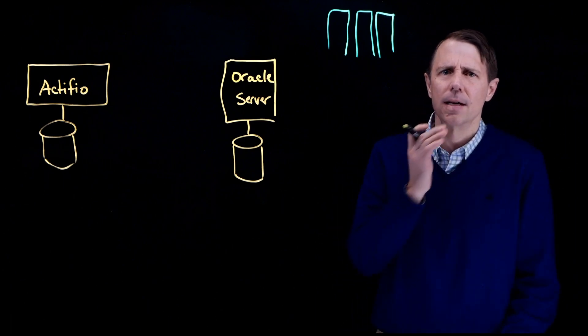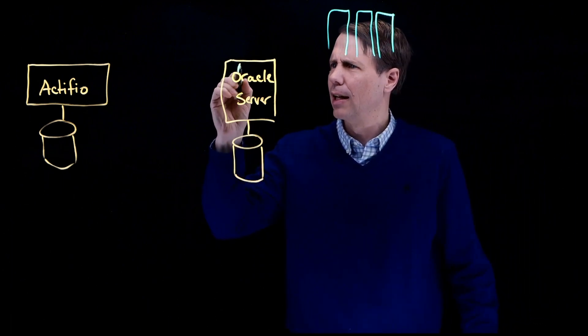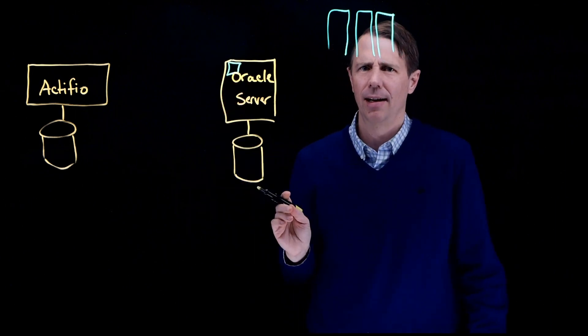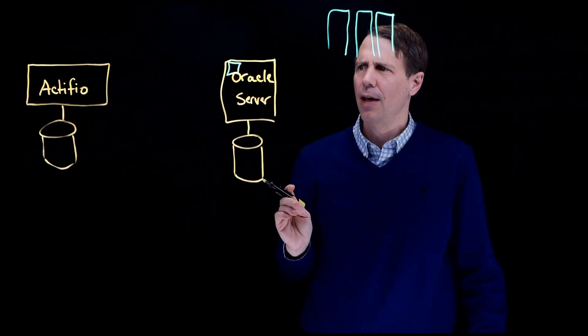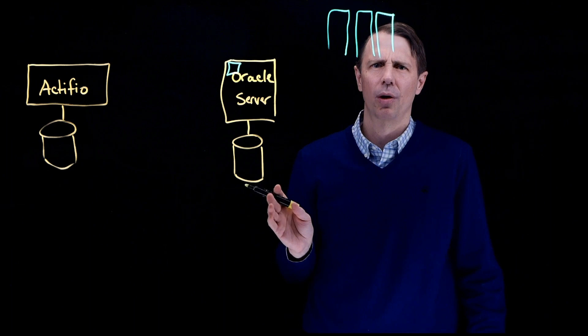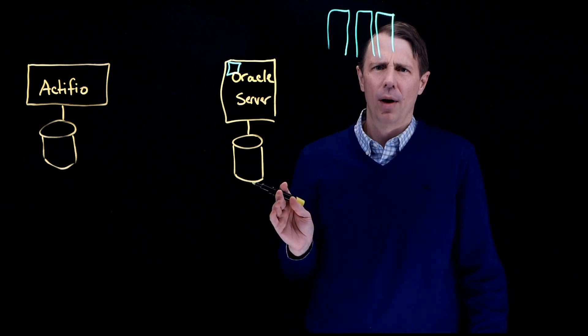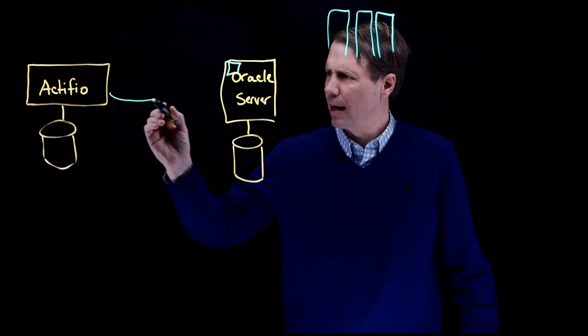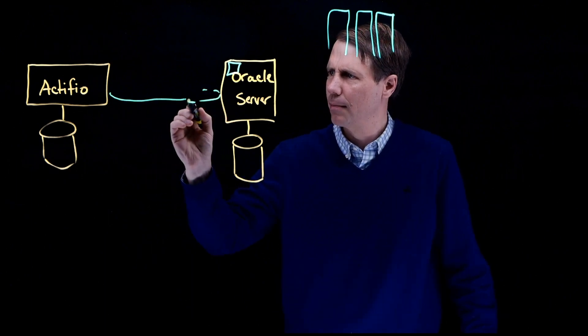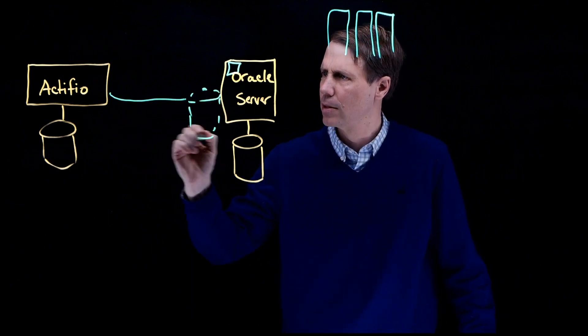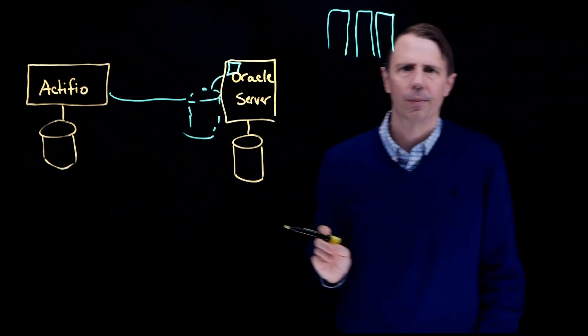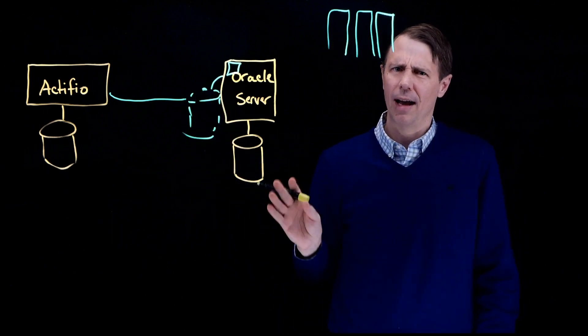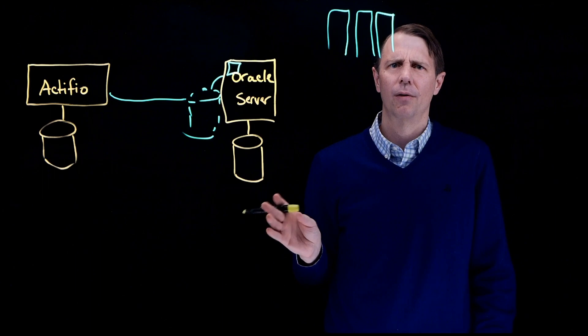Here's how it works. Actifio installs a lightweight connector inside the Oracle server that integrates natively with Oracle RMAN. When it's time for a backup, the Actifio connector first mounts a volume that is presented by the Actifio appliance over NFS, iSCSI, or Fibre Channel.